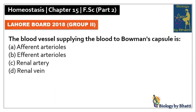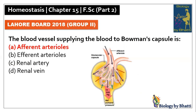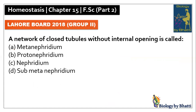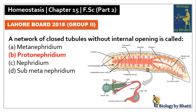Lahore Board 2018 Group 2: the blood vessel supplying blood to Bowman's capsule is called the afferent arteriole, so the answer was A option. In this paper, a network of closed tubules without internal opening is called protonephridium, and the answer was B option.